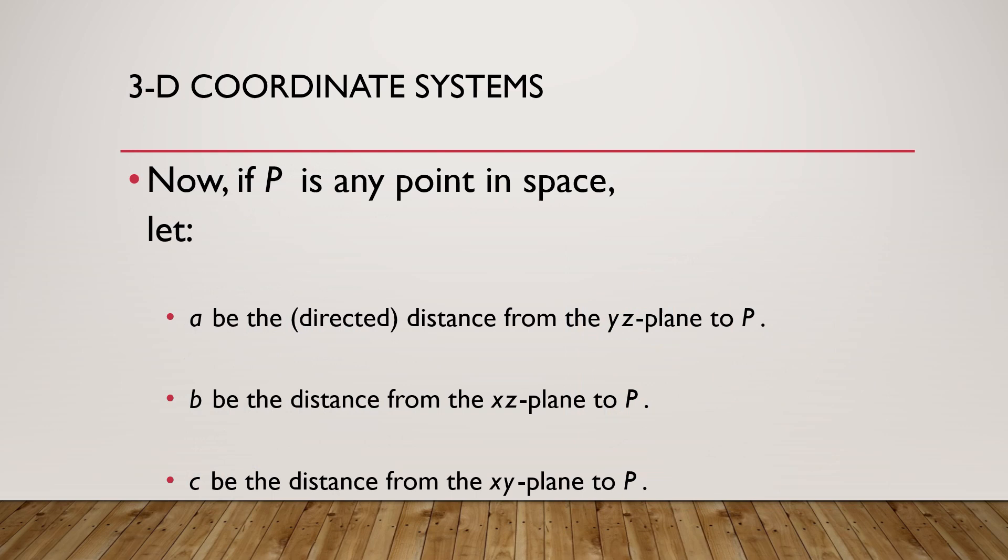In a 3D coordinate system, if we have to locate a point P that is at any random point in space, let's say that a is the distance directed from the y-z plane to P, b is the distance from the x-z plane to P and c is the distance from the x-y plane to P.